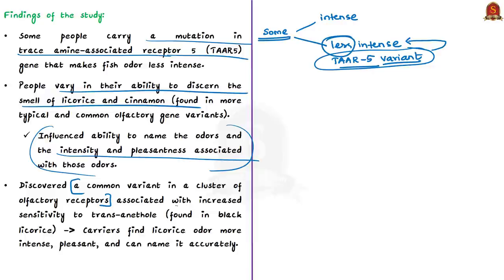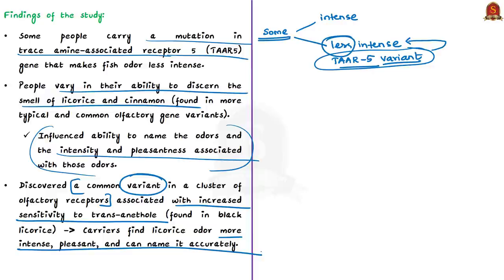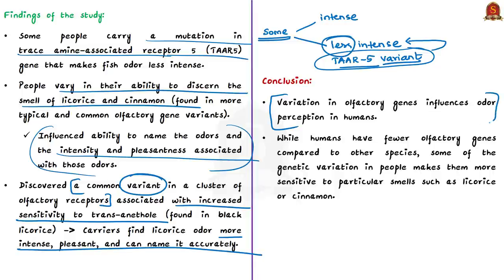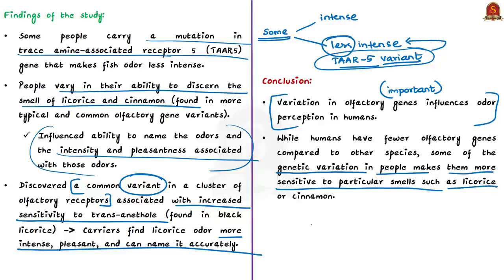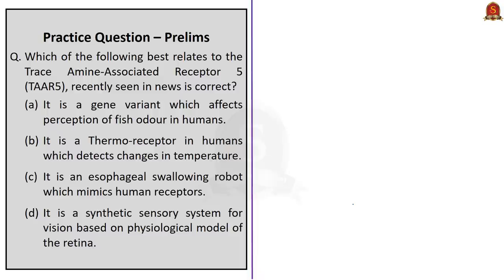The researchers discovered a common variant in a cluster of olfactory receptors associated with increased sensitivity to trans-anethole, found in black licorice. Carriers of this variant find licorice odor more intense, more pleasant, and can name it more accurately. Overall, the key finding is that variation in olfactory genes influences odor perception in humans. While humans have fewer olfactory genes compared to other species, some of the genetic variation makes people more sensitive to particular smells such as licorice or cinnamon.